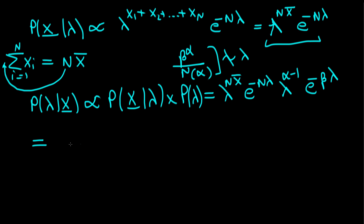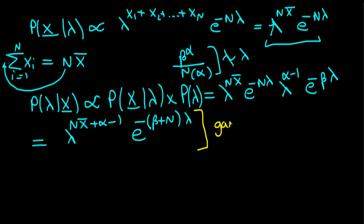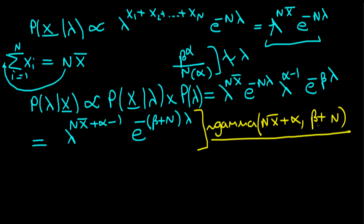Using the normal rules for multiplying exponents, we get lambda to the power n times x̄ plus alpha minus one, times e to the power minus of beta plus n times lambda. We notice this is exactly the kernel of a gamma distribution with updated parameters: alpha prime equals n times x̄ plus alpha, and beta prime equals beta plus n. Since the posterior must be a proper probability distribution and is a function of lambda, it must follow this exact gamma distribution — we don't need to worry about the other constants.